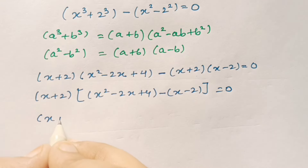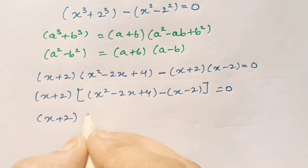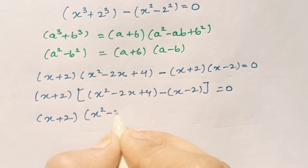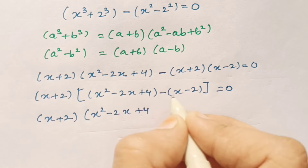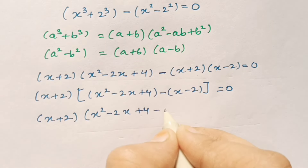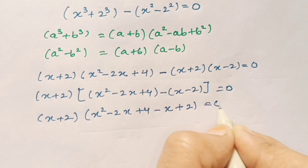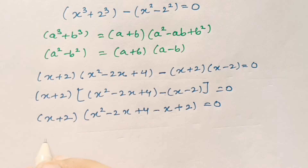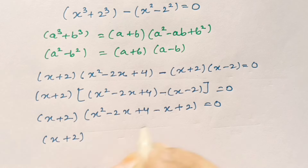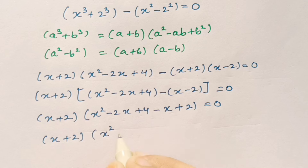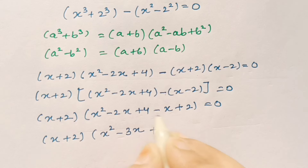Now taking (x + 2) common, this becomes (x + 2) times x squared minus 2x plus 4 minus x minus 2, which simplifies inside the bracket as x squared minus 2x minus x plus 4 plus 2, giving (x + 2)(x squared minus 3x plus 6) is equal to 0.